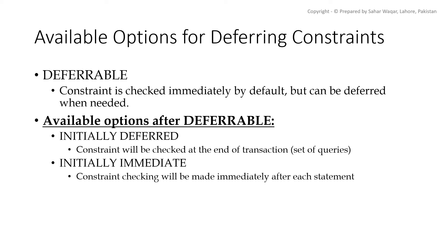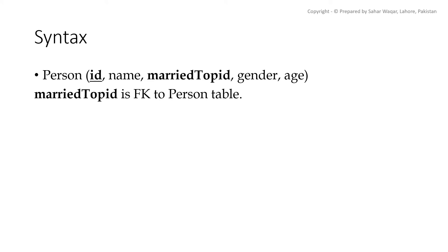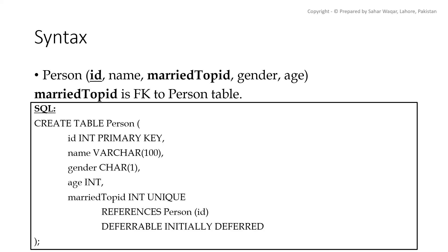For option 2, constraint checking will be made after every statement. Let's see how we can add the DEFERRABLE keyword during the creation of our relations. We have created our person table and added the primary key and foreign key at the end. We have also specified DEFERRABLE INITIALLY DEFERRED, so that our foreign key constraint is deferred until the end of the transaction. Now we can add Ali or Rihanna, whatever comes first, and we will get no errors. The constraint will only be violated temporarily and will only be checked once both insert statements are executed, but both insert statements must be written within the transaction.